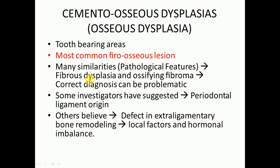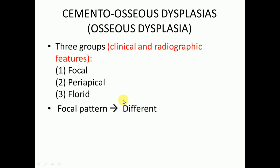There are many similarities in the pathological features of fibrous dysplasia and ossifying fibroma, and the correct diagnosis can be problematic. These similarities with cemento-osseous dysplasia make it difficult to diagnose these lesions. Some investigators have suggested its close proximity with the periodontal tissue, believing it is of periodontal ligament origin. Others believe that defects in extraligamentary bone remodeling due to local factors and hormonal imbalances may give rise to cemento-osseous dysplasia.